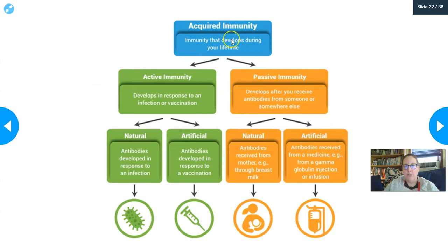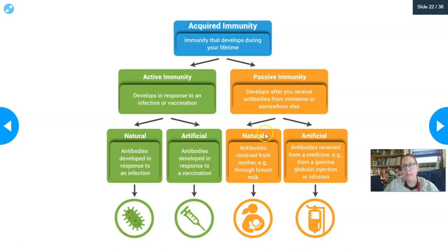Immunity classifications: acquired immunity develops during your lifetime. Active immunity develops in response to infection or vaccination. Passive immunity develops after receiving antibodies from someone or somewhere else. Natural active immunity means antibodies develop in response to infection. Artificial active immunity means antibodies develop in response to vaccination. Passive natural means antibodies received from the mother through breast milk. Passive artificial means antibodies received from a medicine such as a gamma globulin injection or infusion.